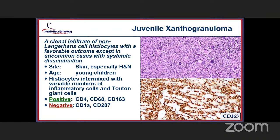Juvenile xanthogranuloma is a clonal proliferation — hence included as a neoplastic category — of non-Langerhans cell histiocytes, definitely associated with a very good outcome, although some very uncommon cases will have systemic manifestation. Within the head and neck, the skin is probably the most common presentation, often in young children. The characteristic Touton-type giant cells are most frequently identified. A variety of histiocytic markers including CD68 and CD163 would be positive, while Langerhans markers CD207 and CD1A are negative, helping to exclude Langerhans cell histiocytosis.